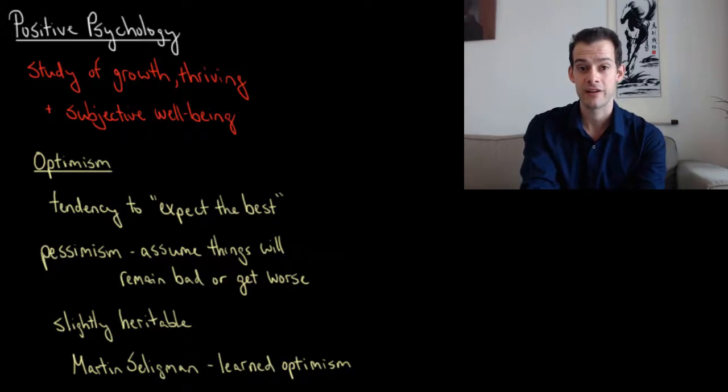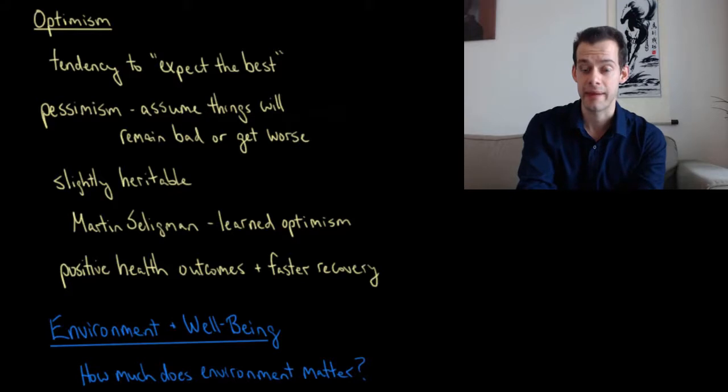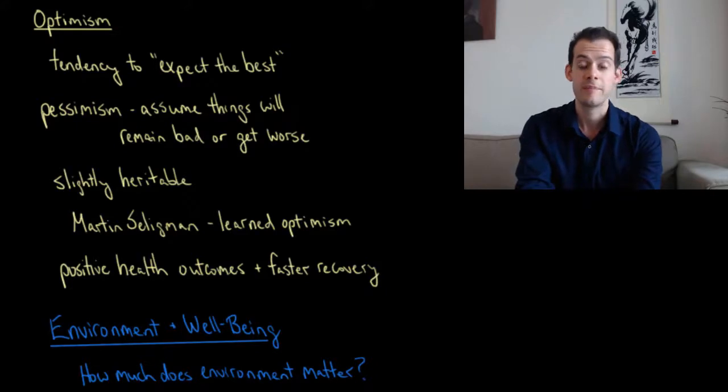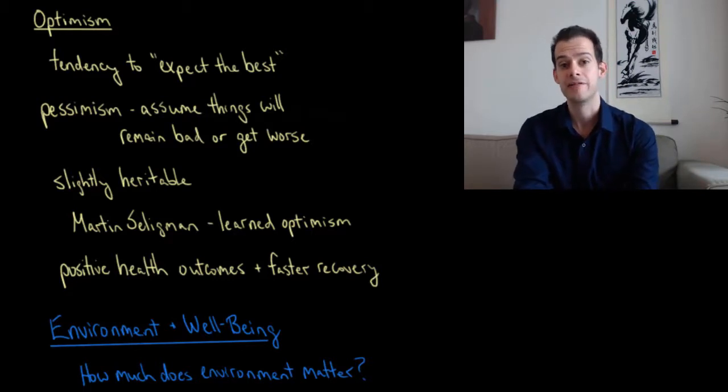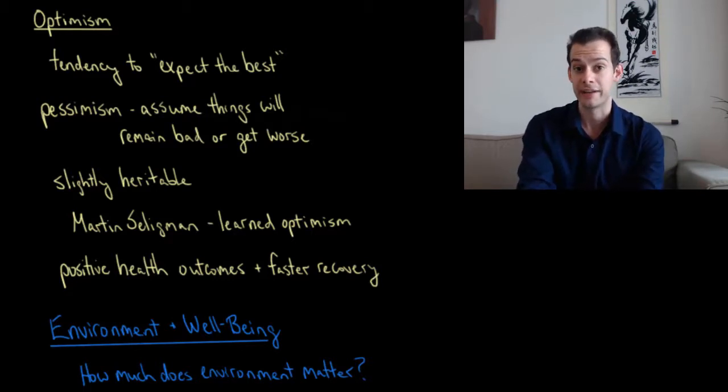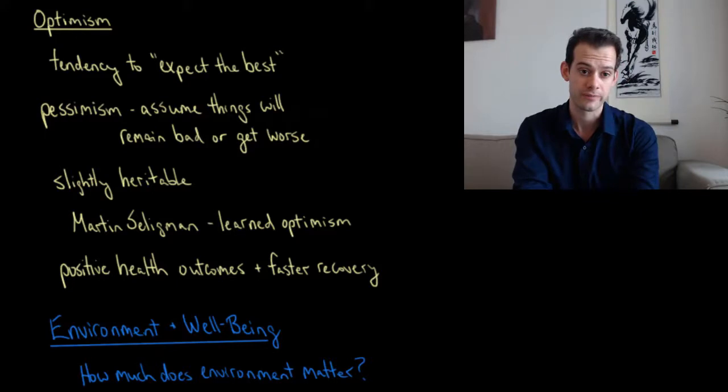One of the areas of research in positive psychology looks at optimism. Optimism refers to a trait that includes a tendency to expect the best. This is the idea that people who are optimistic assume that good things will happen or that the best outcome is what will occur. This doesn't necessarily mean they're blindly optimistic. This is not the best of all possible worlds, as Dr. Pangloss might say in Candide, but instead that even though things are bad, we're in a negative situation, there's the possibility for improvement. This is in contrast to a pessimistic view, which is that things will remain bad or get worse. And it seems that this tendency towards optimism is slightly heritable, but there's also some evidence that it can be learned.